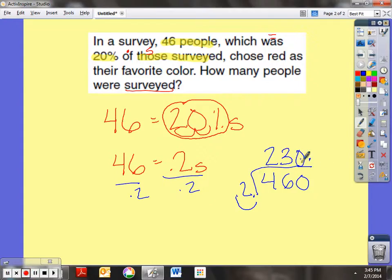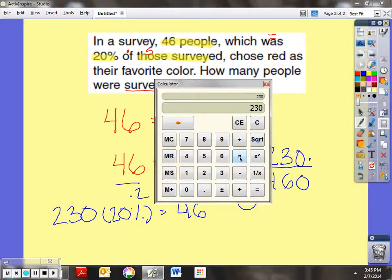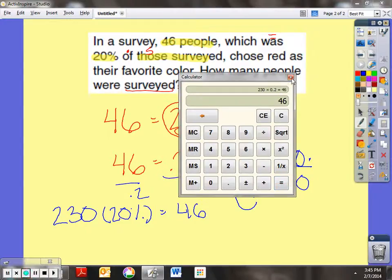46 divided by 2 tenths. Does that make it 230 people were surveyed? Let's take a look. That means 230 people were surveyed. Now, that should mean that 20% of 230 people is equal to 46. So let's do the math real quick. 230 times 20%, so I'll do 2 tenths, equals 46. We have a winner.